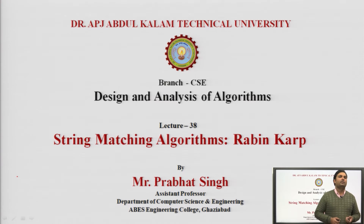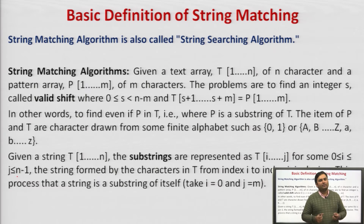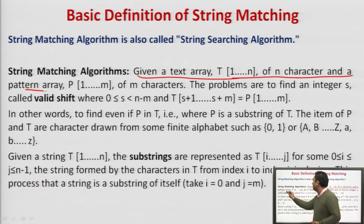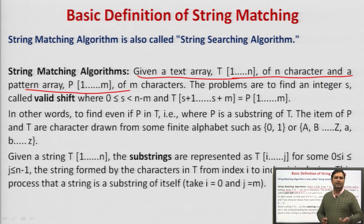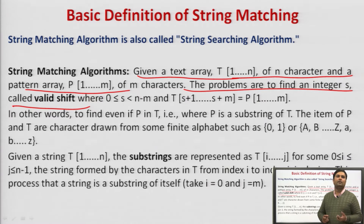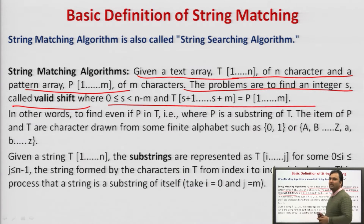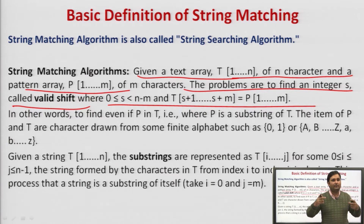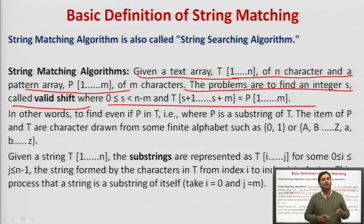Now we will discuss another algorithm, that is Rabin-Karp. First, a brief intro about String Matching: we are given a text of n characters and a pattern of length m. The problem is to find an integer s — that is the number of valid shifts required in order to match each and every character of a pattern with the text. That is the number of valid shifts we have to return. This is the basic String Matching definition.